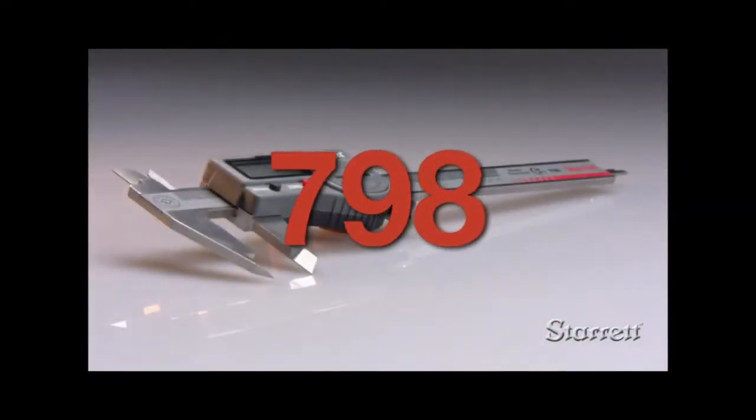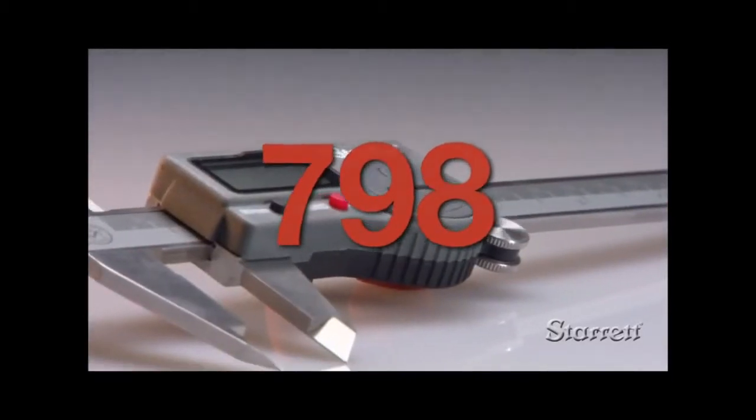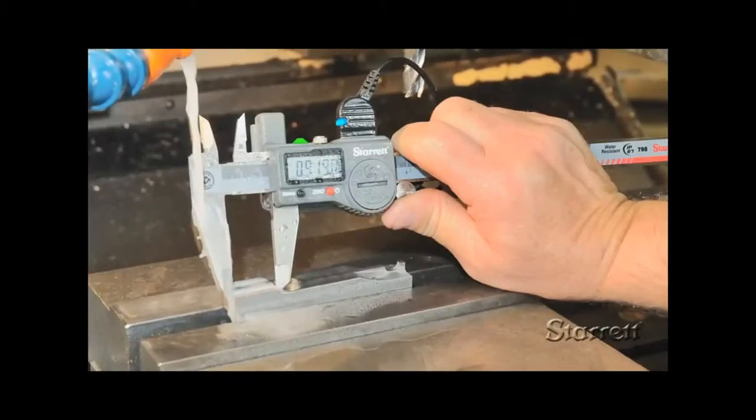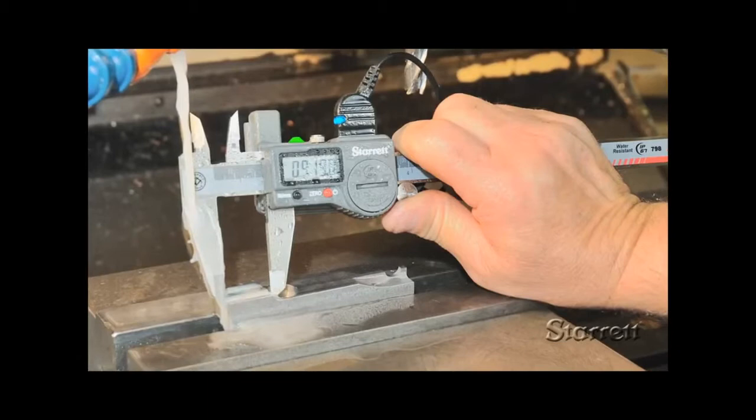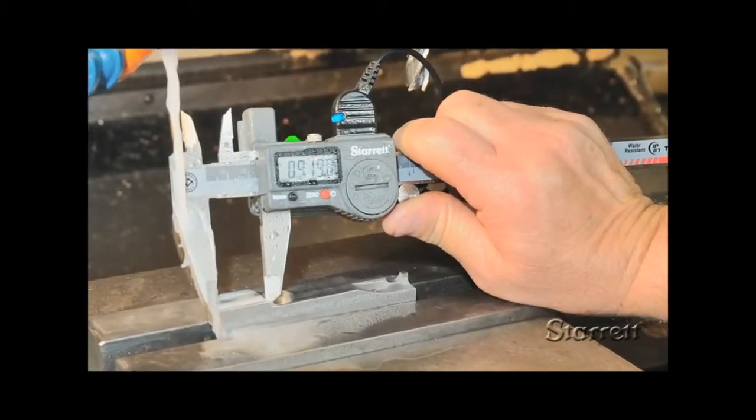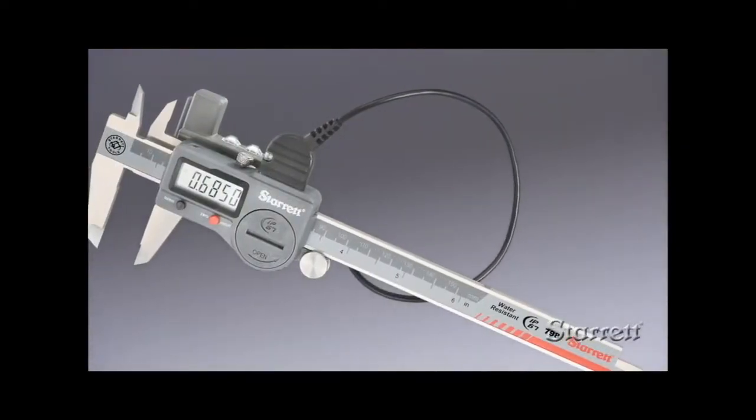The state-of-the-art 798 is the latest electronic slide caliper from Starrett. These top quality tools have IP67 protection from liquid and solid contaminants and include output to interface with data collection.